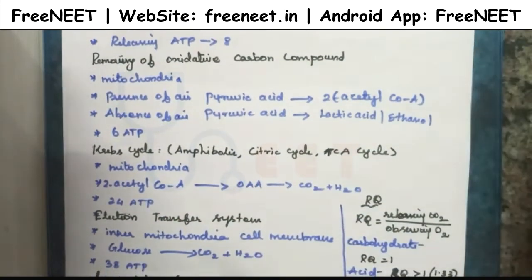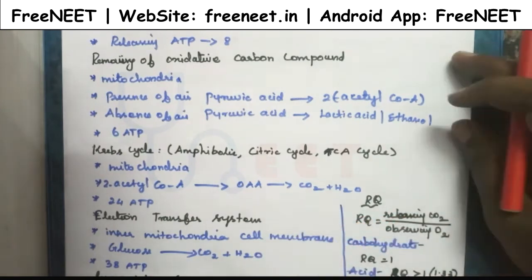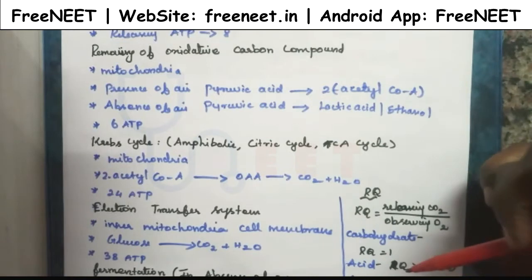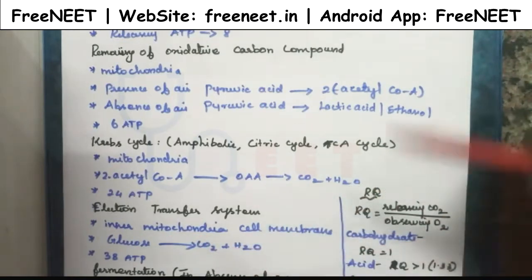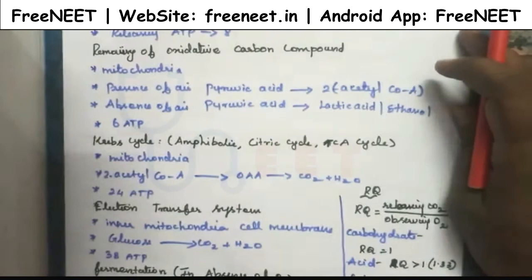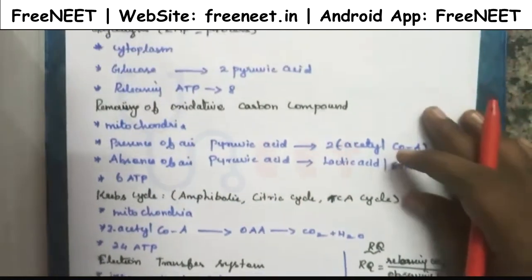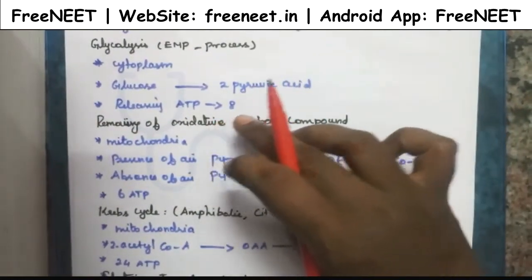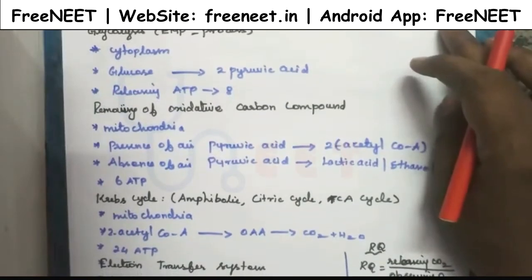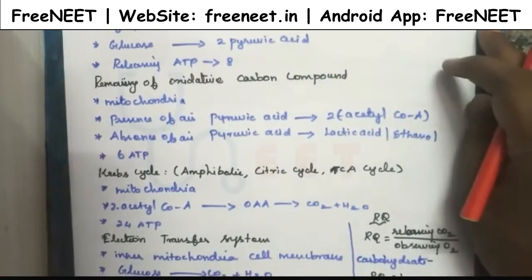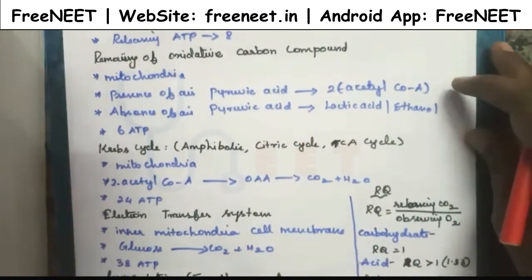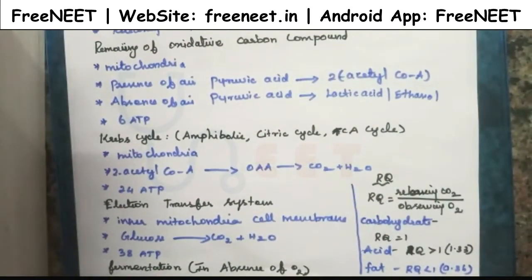Next, we are going to see the electron transport system. This system plays a major role in respiration and takes place in the inner mitochondrial membrane. The main process is glucose converted into carbon dioxide and water. During this process, 34 ATP is released. To summarize: glycolysis releases 8 ATP, removal of oxidative carbon compounds releases 6 ATP, Krebs cycle releases 24 ATP, and the electron transport system releases 34 ATP.